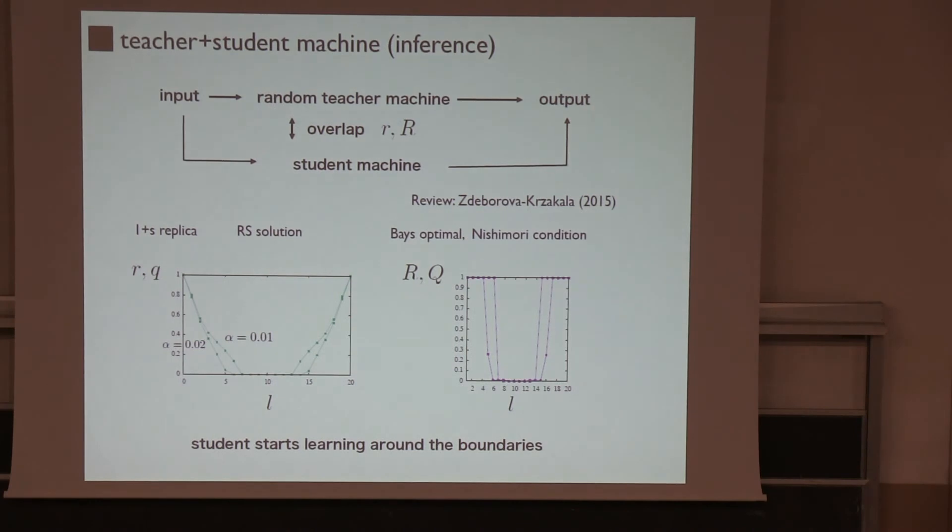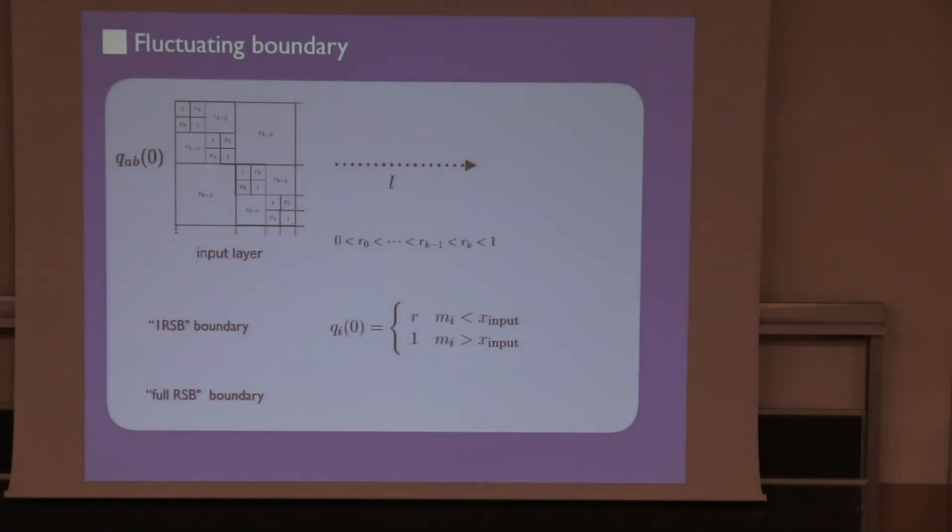I also tried to do the teacher student setting. I assumed that my teacher is a random teacher and I put random input and it produces random output. The student tries to learn that teacher just observing the input and output. This is a typical inference situation and the setting is optimal and Nishimori condition is satisfied. In this setting the same thing happens that the student learns but he learns only starting from the wall.